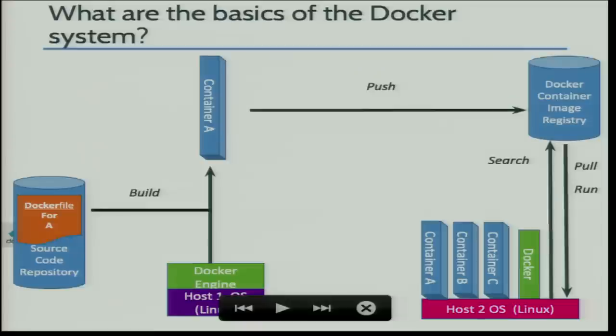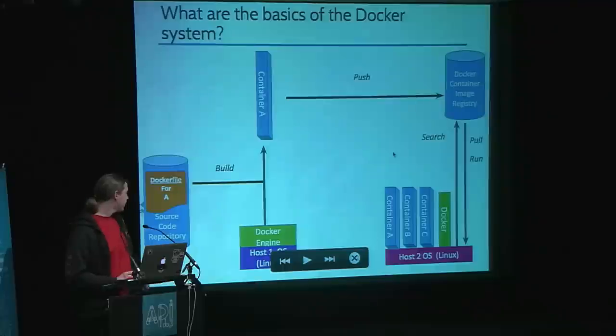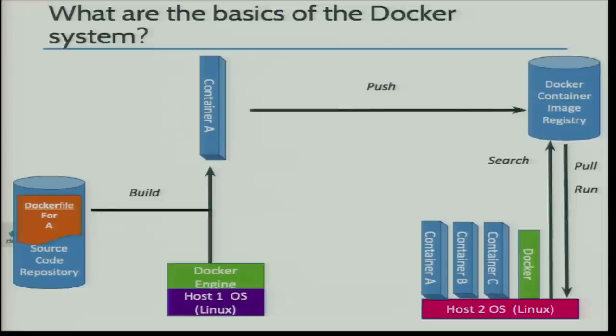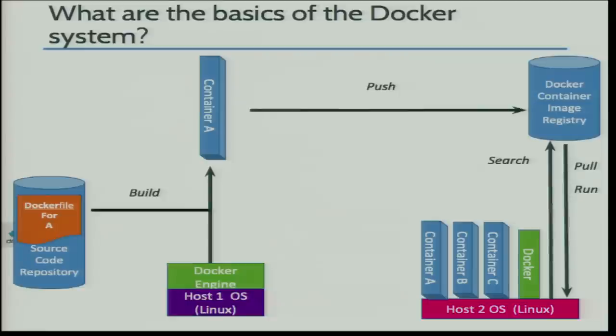For the basics of the Docker system: you have the Docker engine on the host OS. You can trigger a build from a Dockerfile with source code, and this build will generate a container. Then you push this container to the container image registry. Another Docker engine can simply search for this container, pull it, and run it. So you can share containers really easily — inside your own private network, or with the community on the public registry in an open source way.